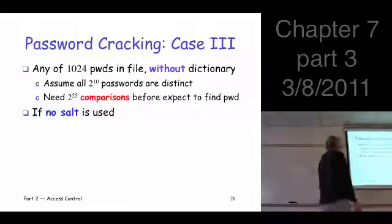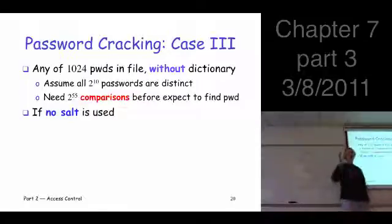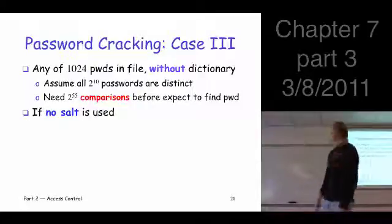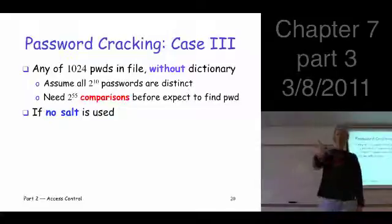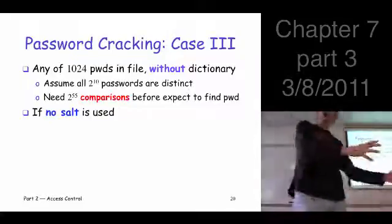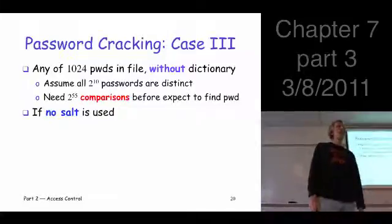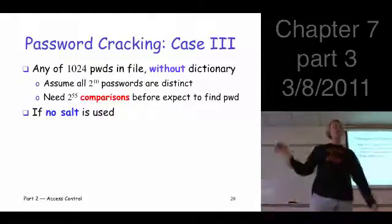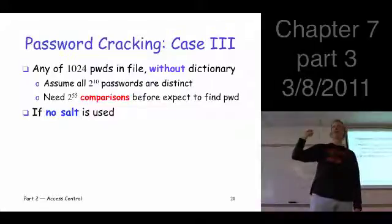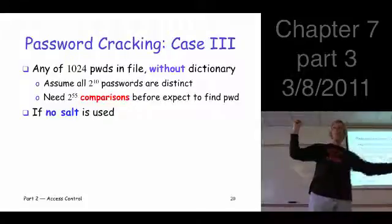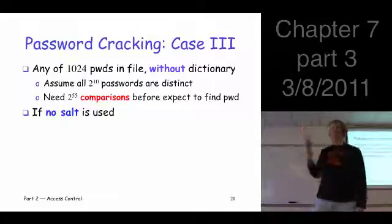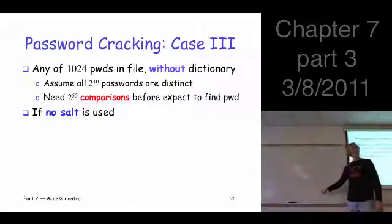Let's suppose no salt is used. Think of writing the code. How would you implement this if you're Trudy? You don't have a dictionary. You have a password file. There's no salt. List all the possible passwords, all 2 to the 56. Grab the first one off your list. What do you do? Hash it, and then compare it to all 1,024. How much work was that? One. I did one unit of work. How many comparisons did I get? 1,024.